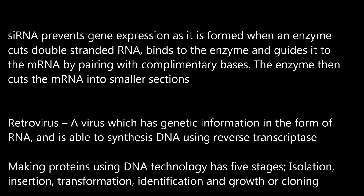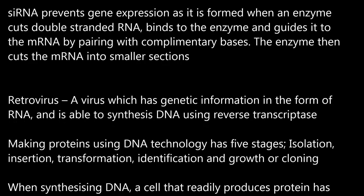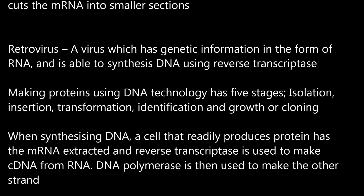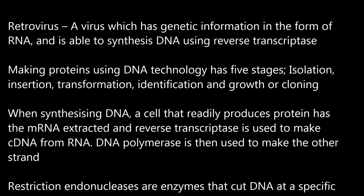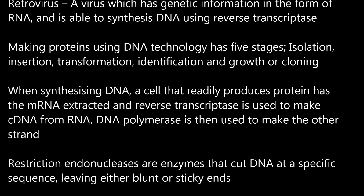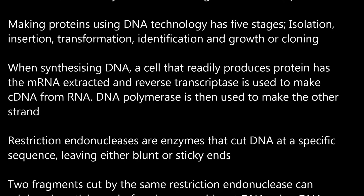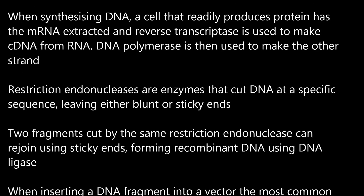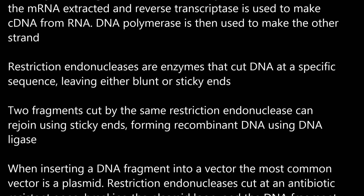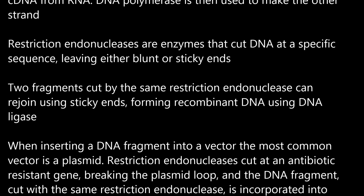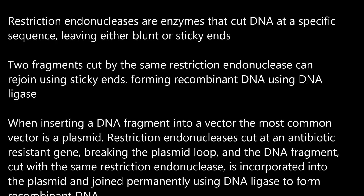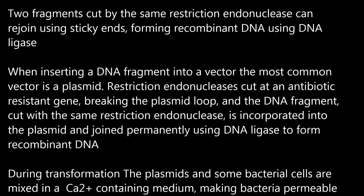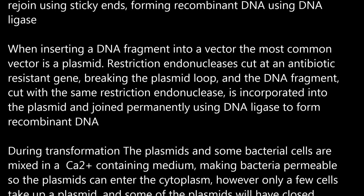Making proteins using DNA technology has five stages: isolation, insertion, transformation, identification, and growth or cloning. When synthesising DNA, a cell that readily produces protein has the mRNA extracted and reverse transcriptase is used to make cDNA from the RNA. DNA polymerase is then used to make the other strand. Restriction endonucleases are enzymes that cut DNA at a specific sequence, leaving either blunt or sticky ends. Two fragments cut by the same restriction endonuclease can rejoin using sticky ends, forming recombinant DNA using DNA ligase. When inserting a DNA fragment into a vector, the most common vector is a plasmid. Restriction endonucleases cut at an antibiotic resistance gene, breaking the plasmid loop, and the DNA fragment, cut with the same restriction endonuclease, is incorporated into the plasmid and joined permanently using DNA ligase to form recombinant DNA.